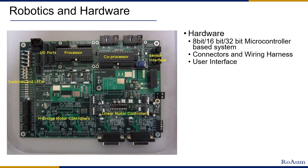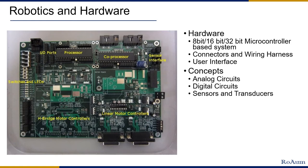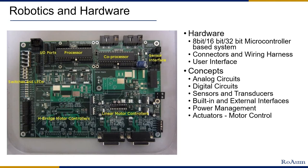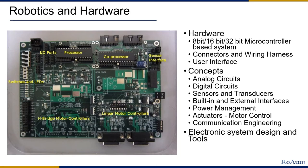A robot professional needs a good understanding of the concepts behind various electronic systems and components. Analog circuits, digital circuits, sensors and transducers, inbuilt and external interfaces, power management, actuators and motor control logic, and communication engineering are the concepts that are used to build robot hardware, whereas electronic system design and tools are used to design, manufacture and maintain robots.